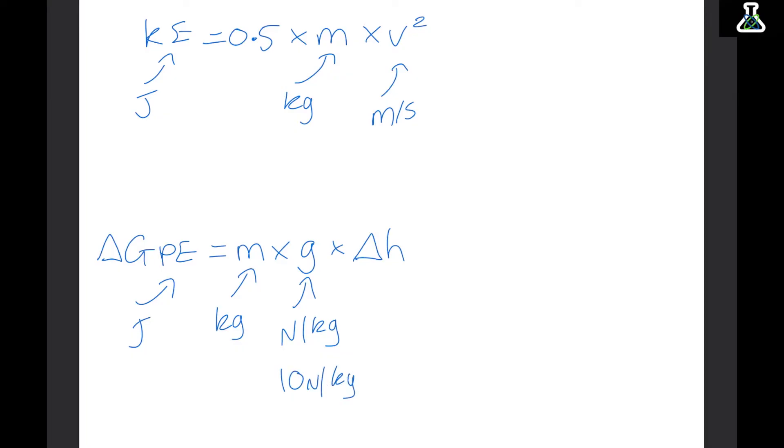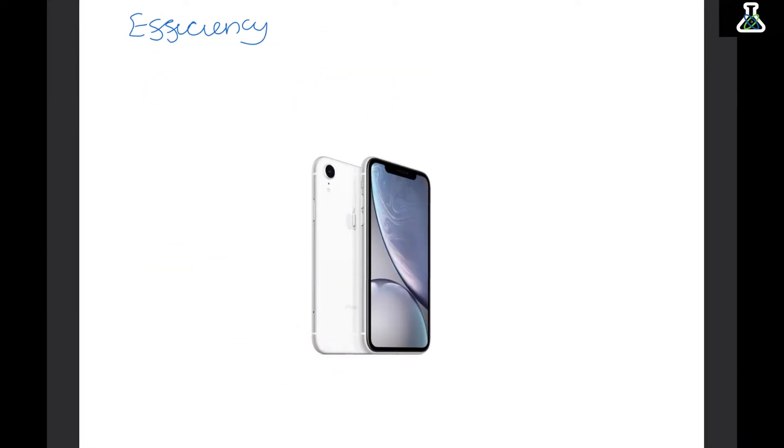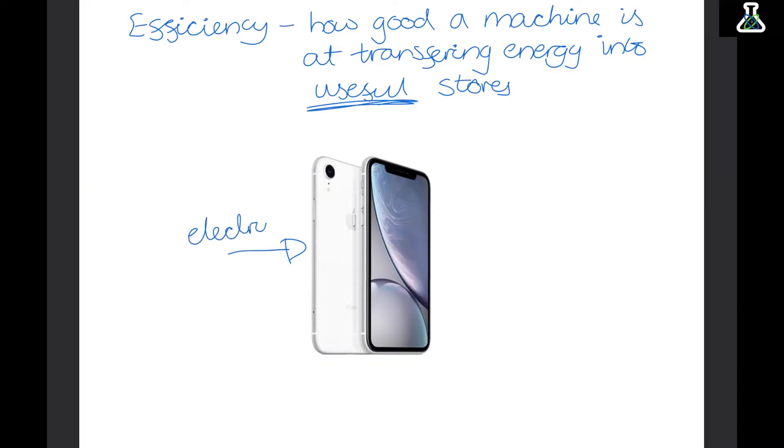Now efficiency is how good a machine is at transferring energy into useful stores. And this word useful is really important. It's the energy we really want. So let's look at a phone. As we charge the phone we transfer electrical energy. And this is used in three main ways.